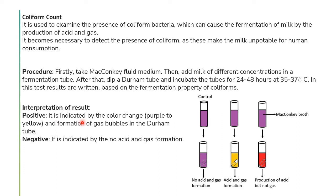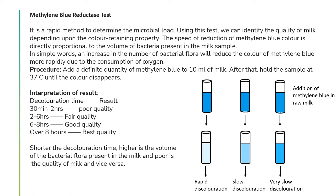The result is given as positive if there is a color change from purple to yellow with gas formation — gas bubbles are observed in the Durham's tube, indicating both acid and gas formation. The result is given as negative if there is no acid and no gas formation observed.